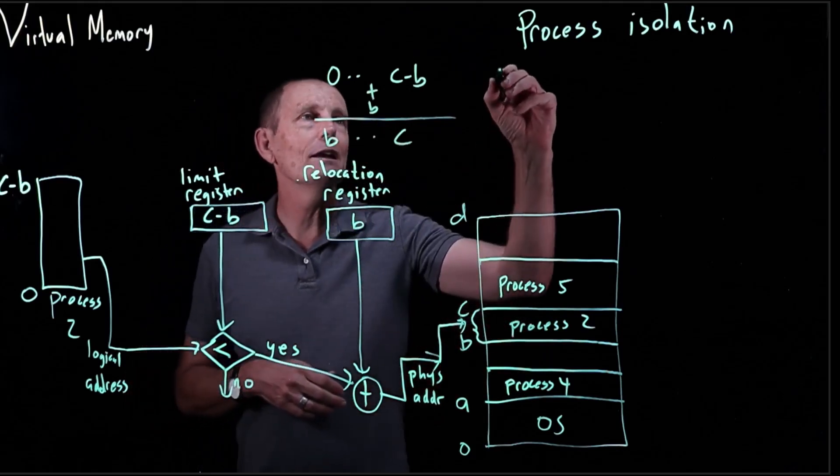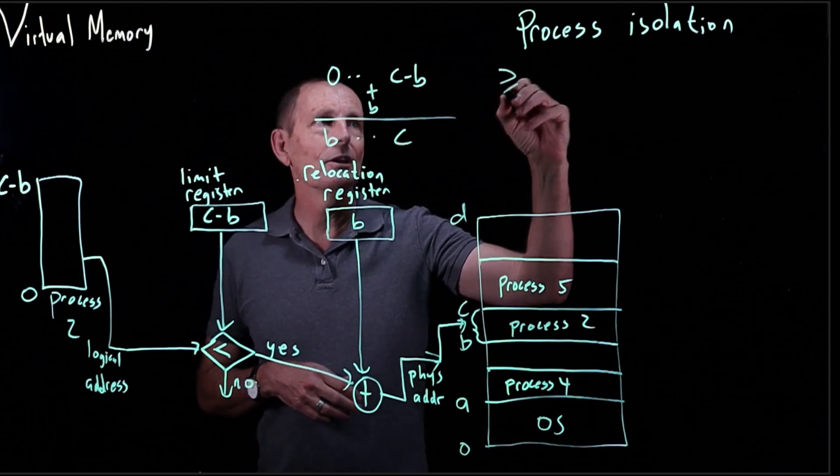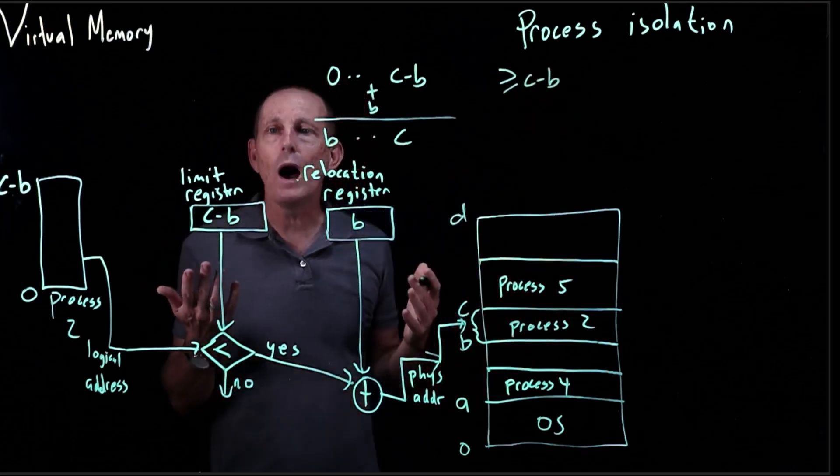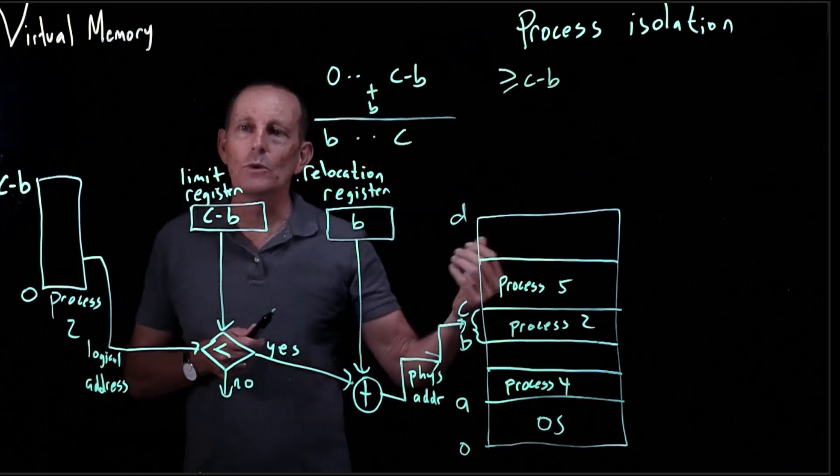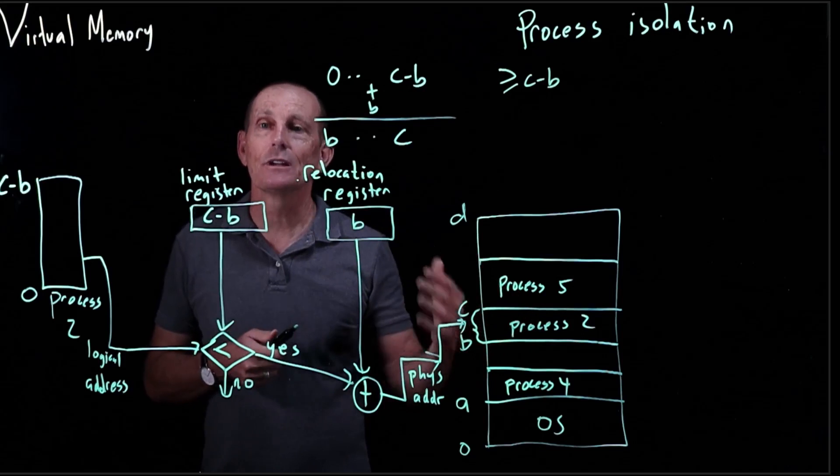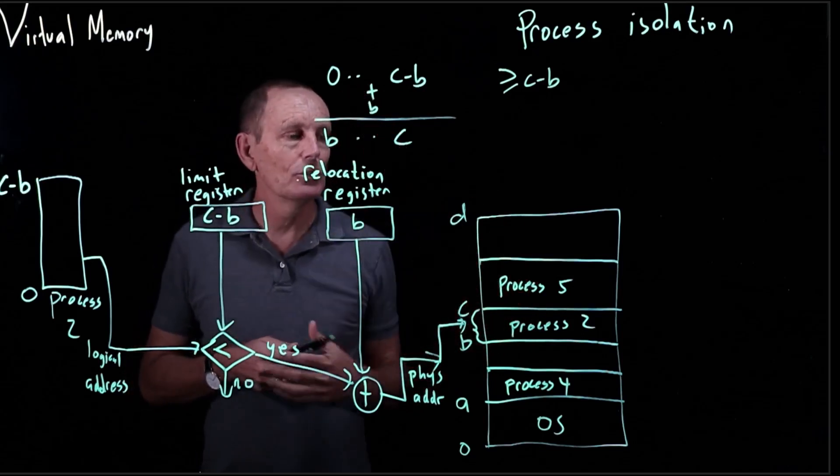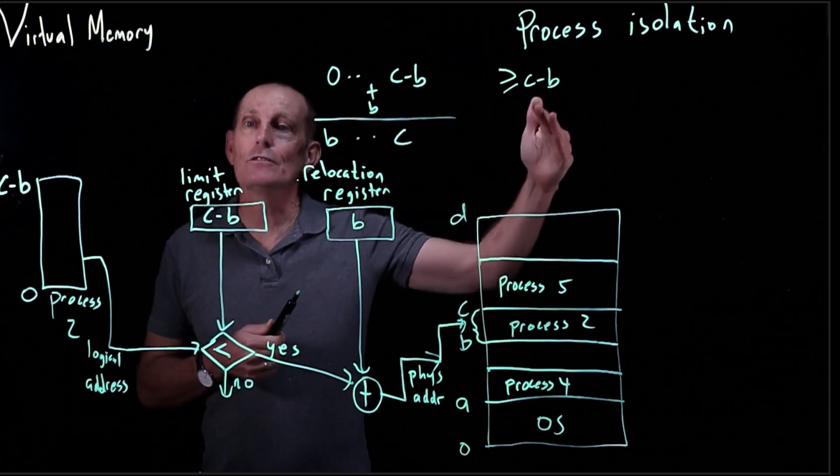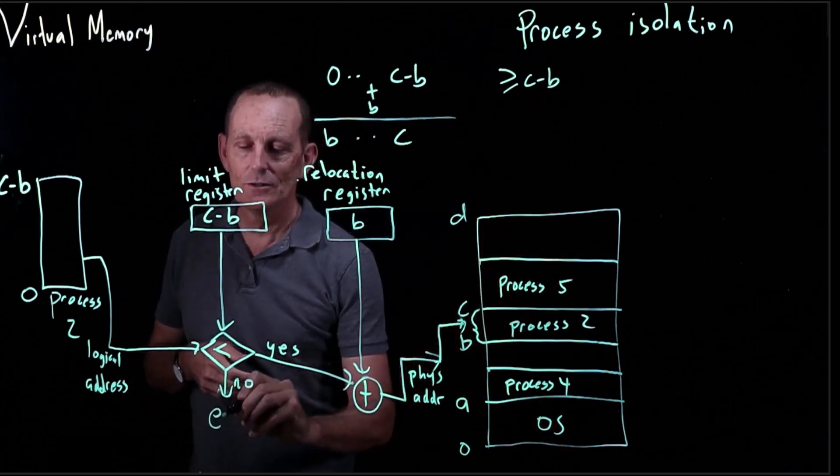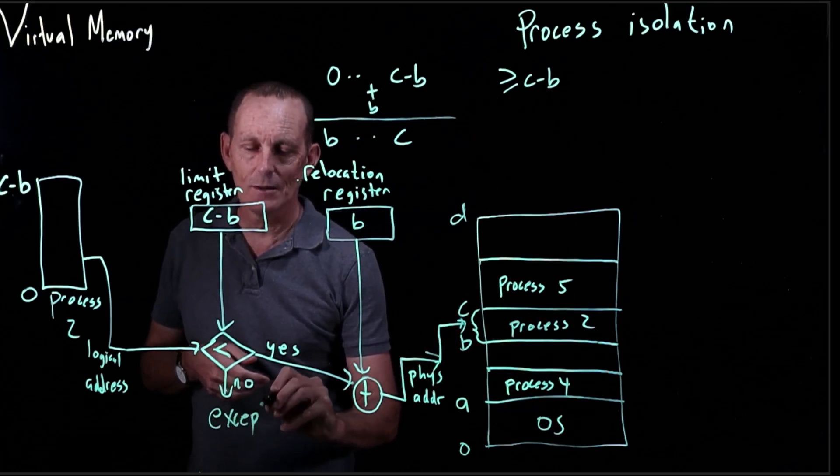However, if we're greater than or equal to C minus B, then we don't want to go out to memory. We don't want to allow the CPU that's running right now to be able to go out C and above in physical addresses. So we need to cause an exception.